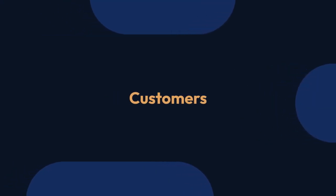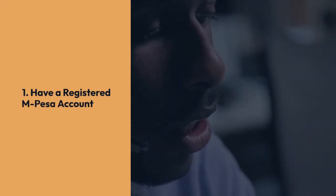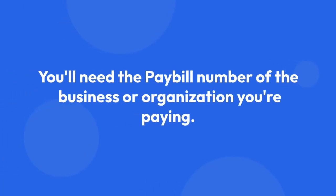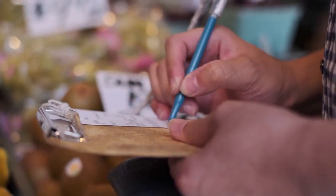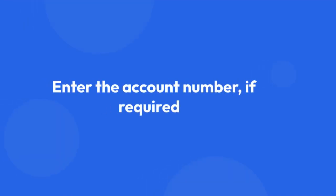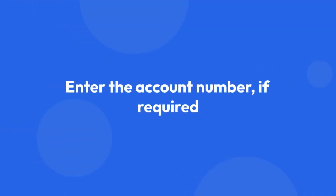Now, for customers who want to pay bills via M-Pesa Express: 1. You'll need to have a registered M-Pesa account with sufficient funds. 2. You'll need the pay bill number of the business or organization you're paying. 3. Open your M-Pesa menu and select Lipa na M-Pesa. 4. Choose pay bill. 5. Enter the business's pay bill number. 6. Enter the account number, if required. Some businesses use this to identify specific accounts or invoices.